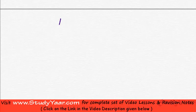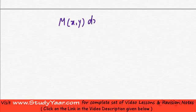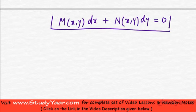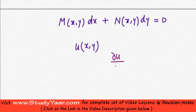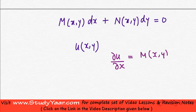Let's try to analyze a differential equation of type M(x,y)dx + N(x,y)dy = 0. We are going to assume that there exists a function u(x,y) such that ∂u/∂x = M(x,y) and ∂u/∂y = N(x,y).